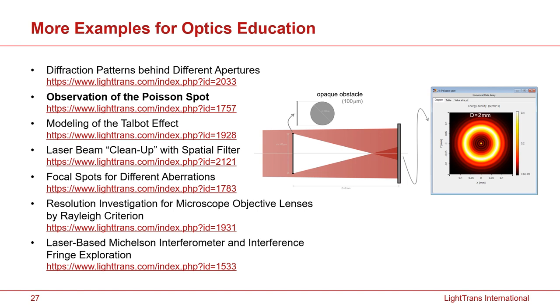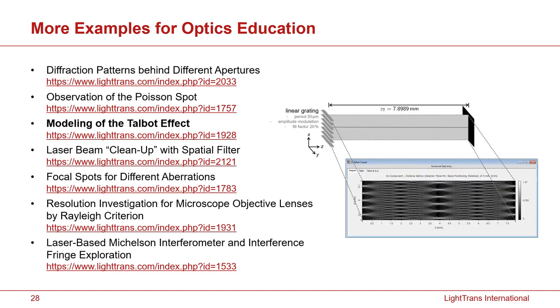So if you have a circular plate and you check the diffraction effect at a certain distance behind it, you will see a bright spot inside, in the center. Or in case of grating diffraction, you can see the well-known Talbot effect as well. And there are more examples. For example, we can show the 4F setup which can be used as a laser beam cleanup, a spatial filter, and even more.